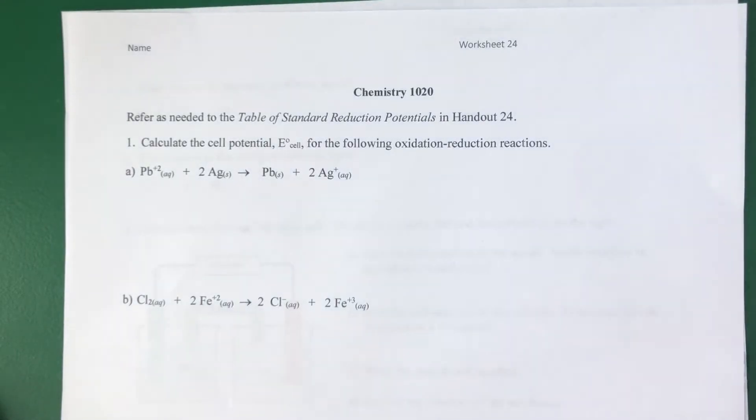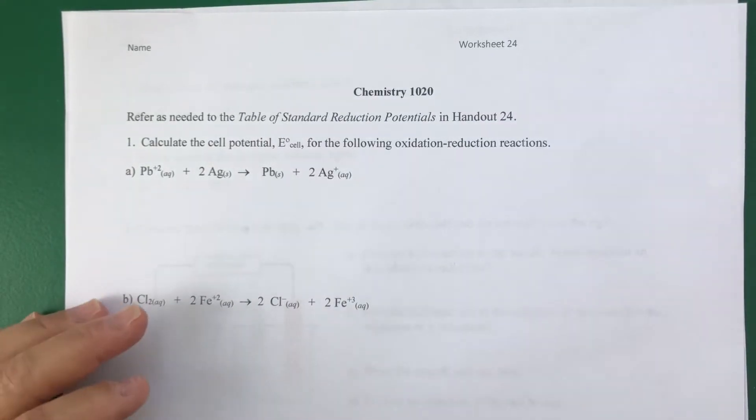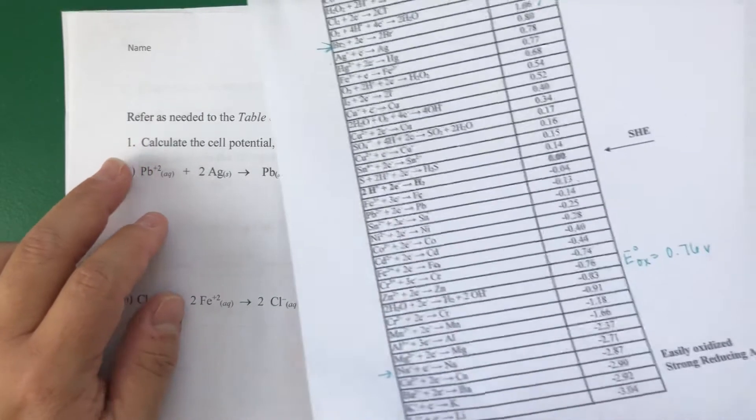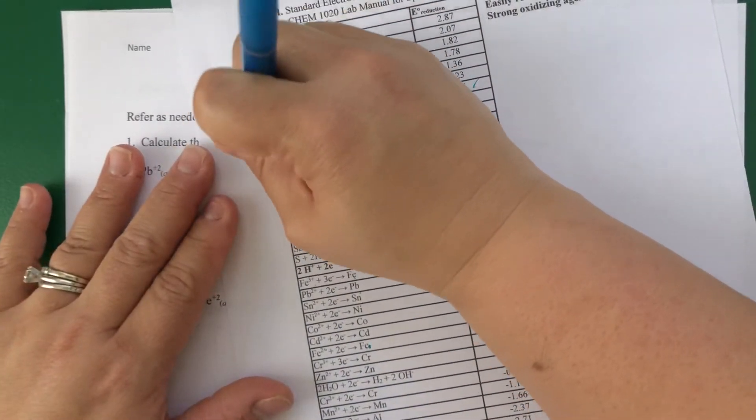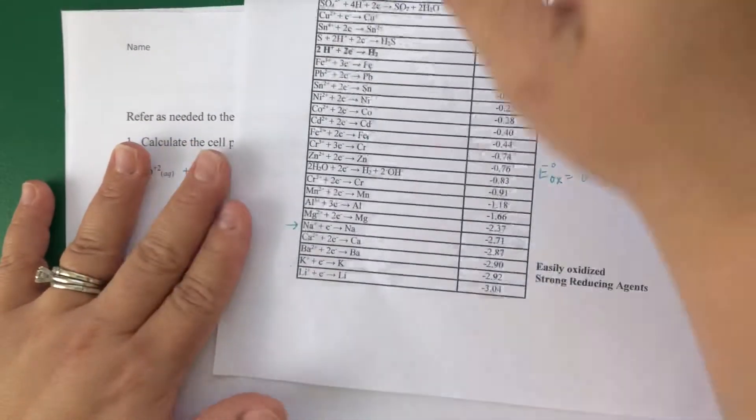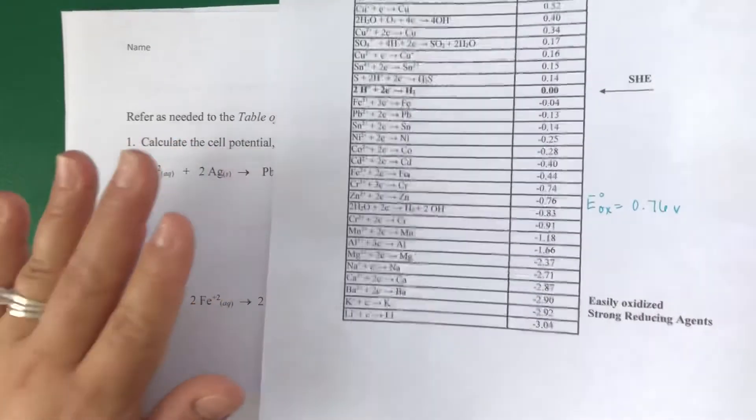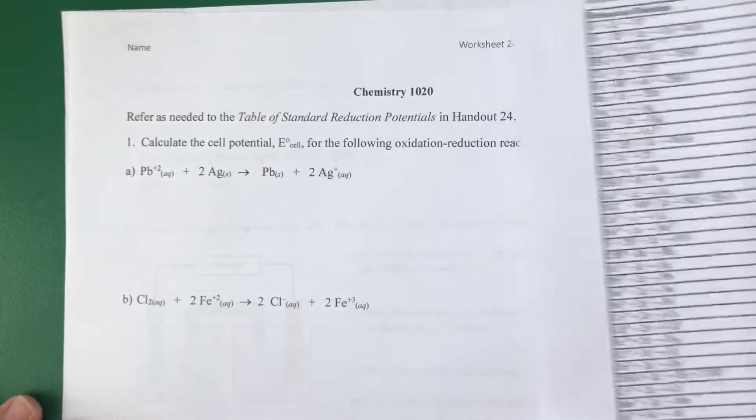Okay, this is worksheet 24. I'm going to walk you through some of these problems. Make sure that, as I wrote in the instructions, you have this nice chart available. You're going to be using it to refer and get the values of reduction potentials as needed. So this is from your handout 24.